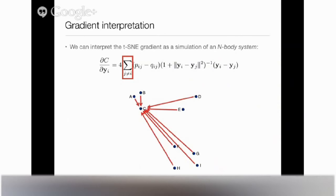One limitation is that we have to consider all pairwise interactions between points. With n points, we have n² interactions to sum at every gradient update. This is limiting if you want to visualize datasets larger than about 5,000 to 10,000 objects. So I worked on an approximation to these forces that operates in O(n log n), which scales up much better to large datasets.